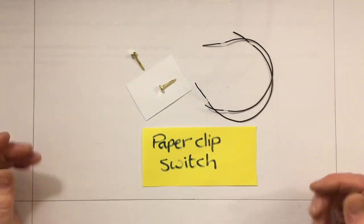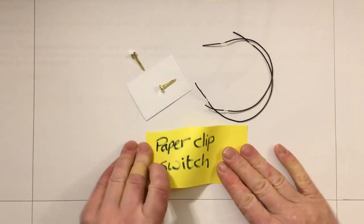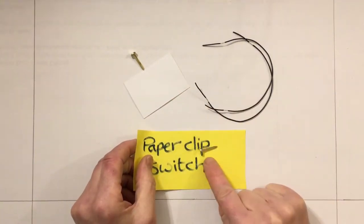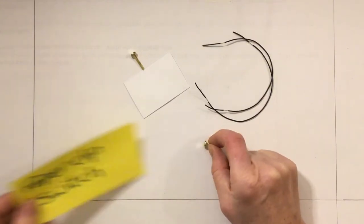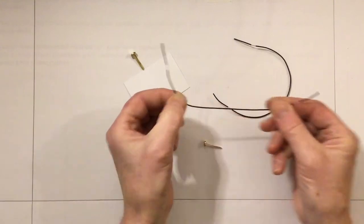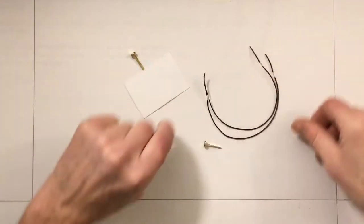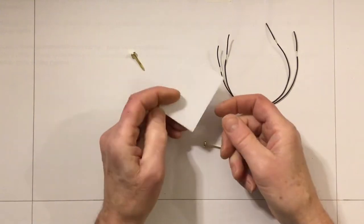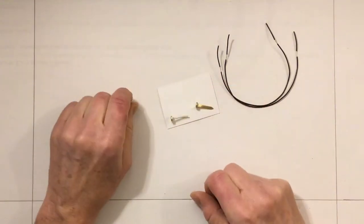These are the parts we need to make the paper clip switch. Well, they're not really paper clips. I think the proper name is paper fasteners, but there we go, paper fastener switch. We need two black wires, the two black wires there at the same length, a little piece of card, and two paper fasteners.